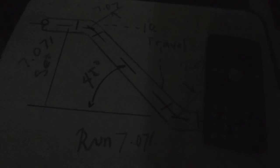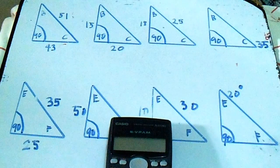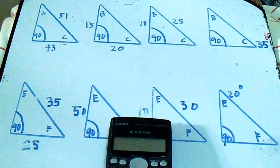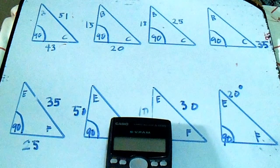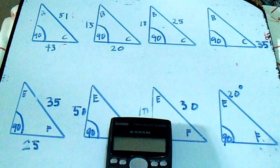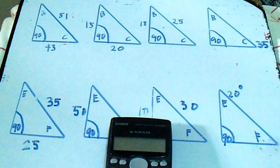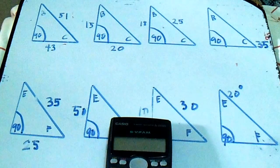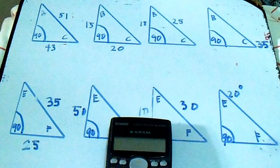That's all for that example — thanks for watching, have a nice day. Hi guys, welcome to Piping, Welding and DT Channel. This is a computation of triangles. We have eight triangles, and each triangle has a different computation. From the top, we compute the degrees of the triangle, and the same from the bottom triangle.